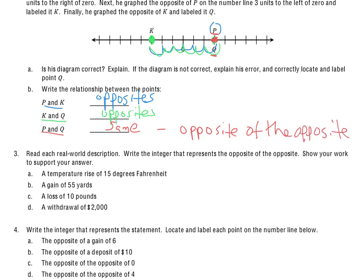And what I mean is, if P is the starting point and it's 3, the opposite is negative 3. And the opposite of the opposite is back to 3. So really they're the same, but they could be opposite of the opposite.